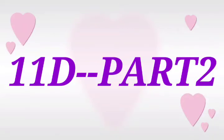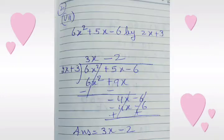Let's do question number 2, sub-part 7: 6x squared plus 5x minus 6 divided by 2x plus 3. First we will see with which number we will multiply 2x plus 3 so that we get the first term 6x squared.